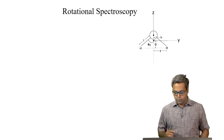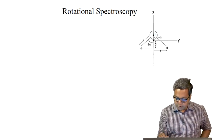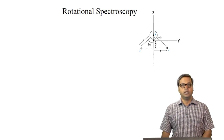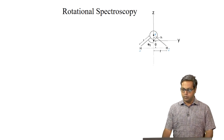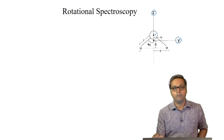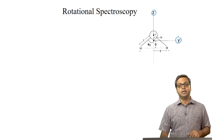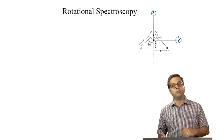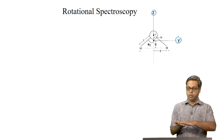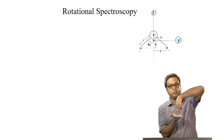Here we have the water molecule. This is the oxygen atom and these are the two hydrogen atoms. Here we see the Z axis and the Y axis. The X axis is out of the plane of the water molecule.